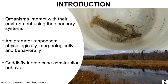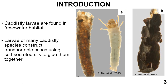Caddisfly larvae are known to elicit both morphological and behavioural responses when exposed to predation risk, and these can be observed in their case-building behaviour. These larvae are found in various freshwater habitats like pools, ponds, streams, rivers, and lakes. Larvae of many species build cases of different sizes and shapes using materials present in their environment — some use mineral materials like sand grains, and some use organic materials like the bark of a tree, leaves, or sticks.